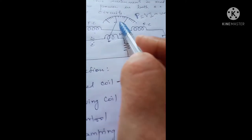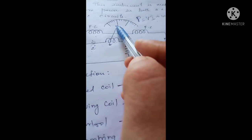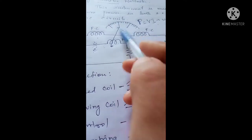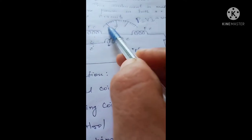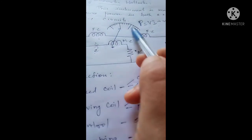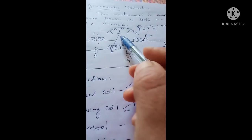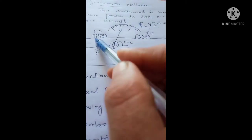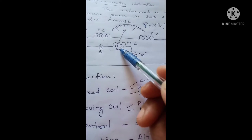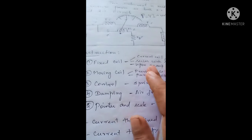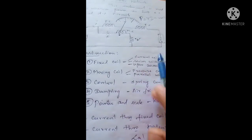The scale is a mirror-based scale to avoid parallax error. There is a pointer placed over a mirror-based scale, and this pointer is a knife-edge pointer. The fixed and moving coils are made of copper coils.